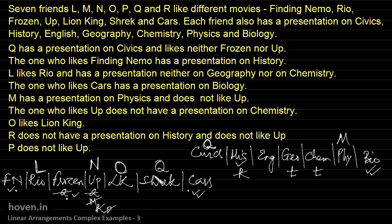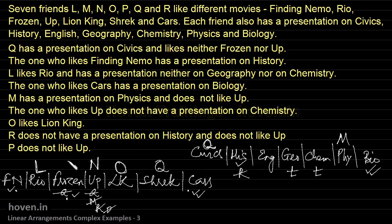Now that Q is at Shrek, M is the remaining unallocated person. M cannot go to Cars or FN for the same pairing reasons. Therefore, M must be allocated to Frozen. So L, M, O, and Q are now all allocated.